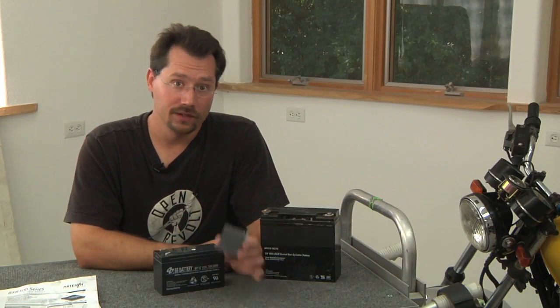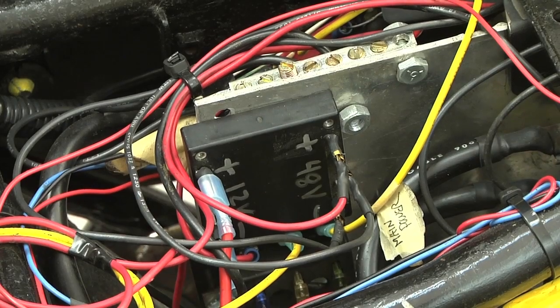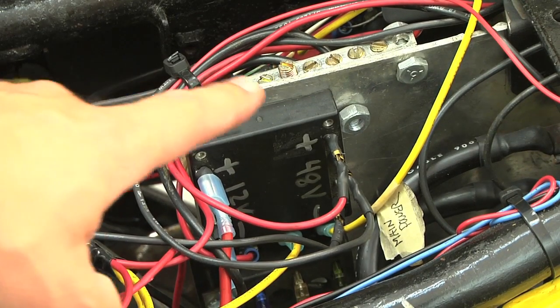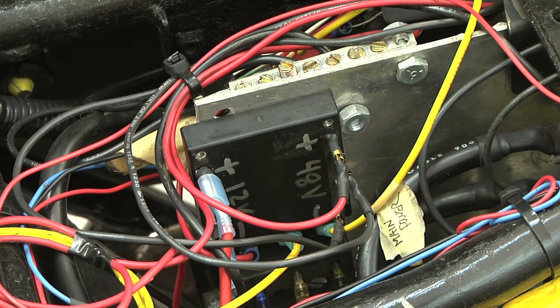Now in the case of my motorcycle, the DC to DC converter is installed under the seat right near the fuse panel, takes up little space and little weight, and the headlight, turn signals, all that is always ready to go.